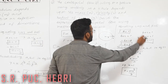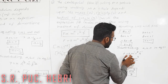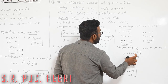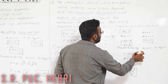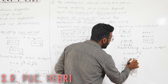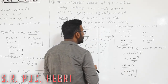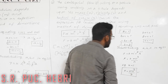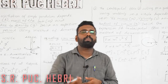Substituting a = 1, b = 2, c = −1 back into equation 1: F = k · m¹ · v² · r⁻¹. Rearranging: F = k mv²/r. For k = 1, the equation for centripetal force is F = mv²/r. Some numericals remain and will be done in the next class.